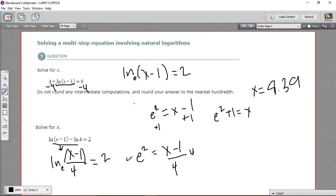I'm going to multiply by 4. So 4 times e squared equals x minus 1, and then we're going to add 1 to both sides. So we get 4 e squared plus 1 equals x.